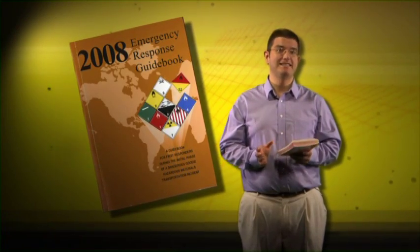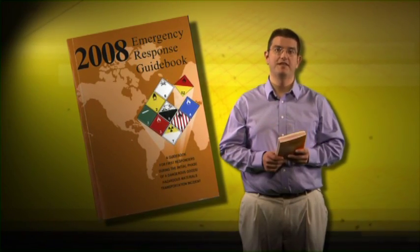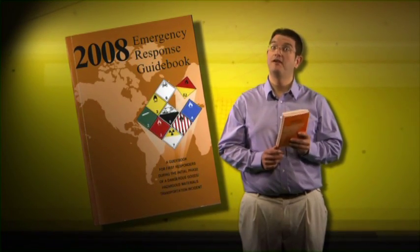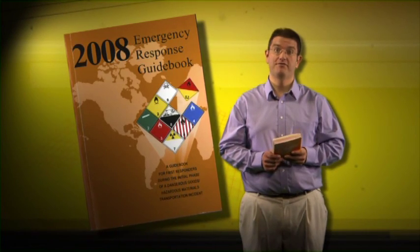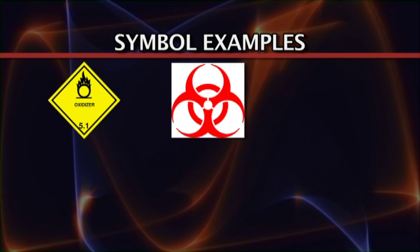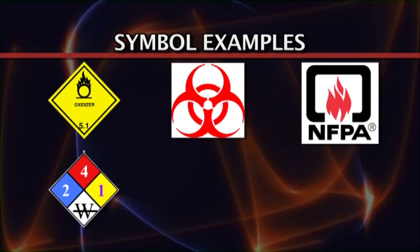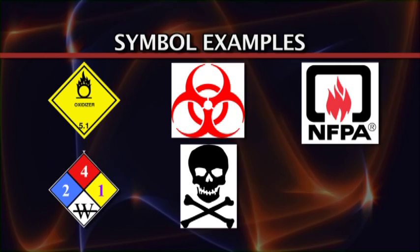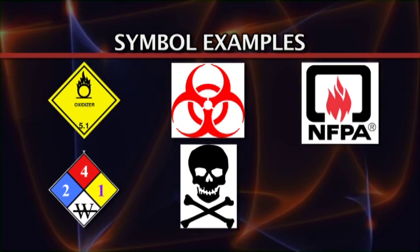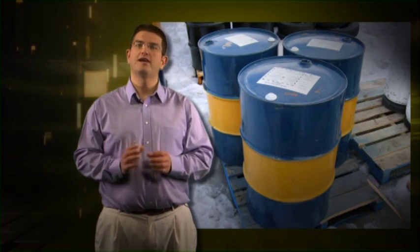There's a lot of symbols, ID numbers, and identifying markers for the hazards you'll face every day — pay attention to them; they'll help keep you and the people around you safe. Some of those symbols include the DOT placard, various hazardous material markings, the NFPA label, the HMIS label, the skull and crossbones — which is a symbol for poison — and the radioactive icon.